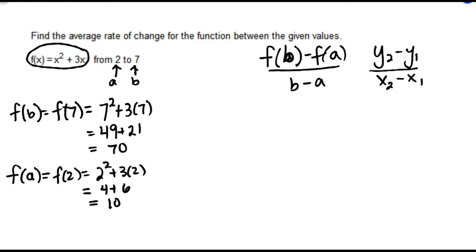Now we'll apply the average rate of change formula. f(b) is 70, f(a) is 10, so in the numerator we have 70 - 10. In the denominator we have 7 - 2, that's b - a. So simplifying: 70 - 10 is 60, 7 - 2 is 5, and 60 divided by 5 gives us 12.